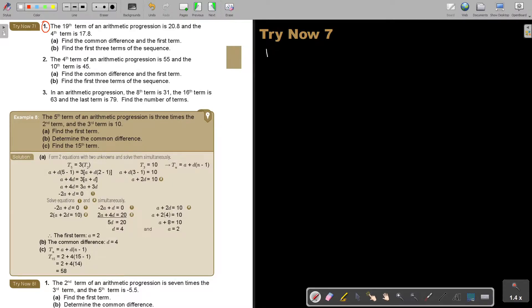Number 1. The 19th term of an AP. So I know it's an AP. And I know that the 19th term is 20.8 and the 4th term is 17.8.